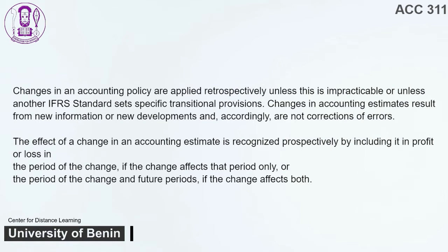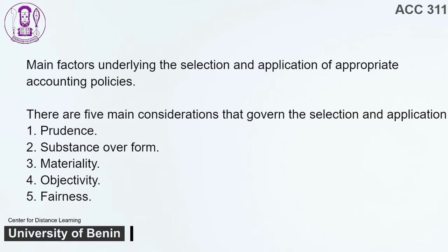The effect of a change in an accounting estimate is recognized prospectively by including it in profit or loss in the period of the change, if the change affects that period only, or the period of the change and future periods, if the change affects both. Main factors underlying the selection and application of appropriate accounting policies. There are five main considerations that govern the selection and application by management of appropriate accounting policies in the preparation of financial statements. They are: 1. Prudence. 2. Substance over form. 3. Materiality. 4. Objectivity. 5. Fairness.